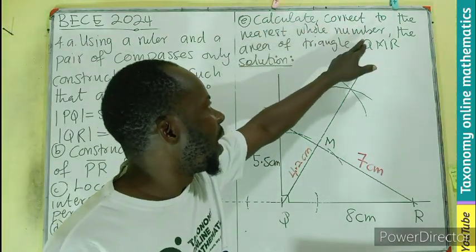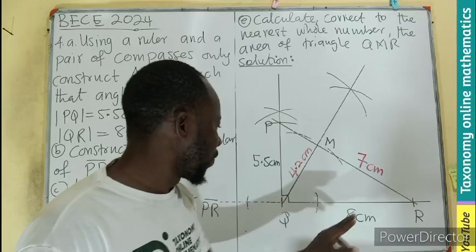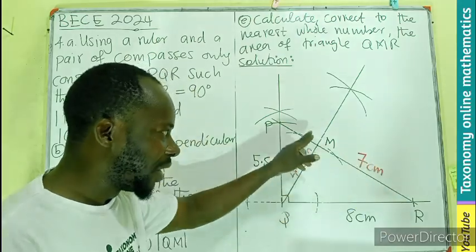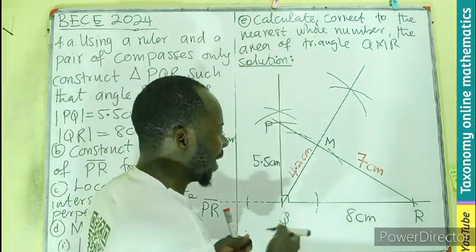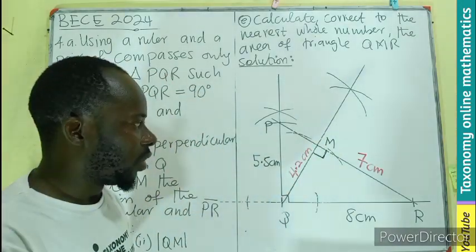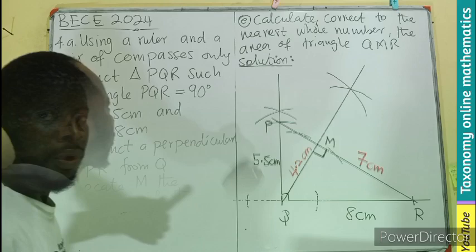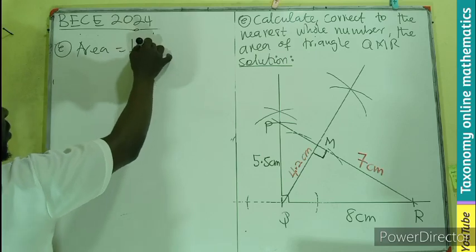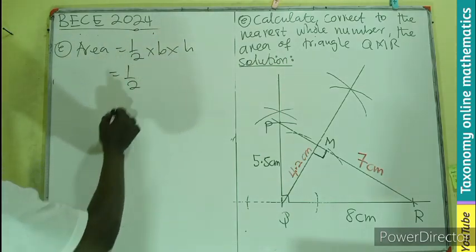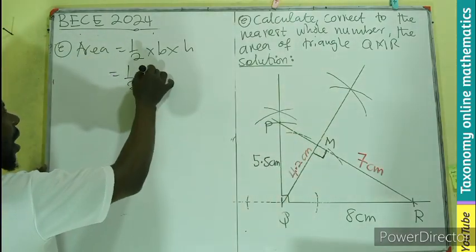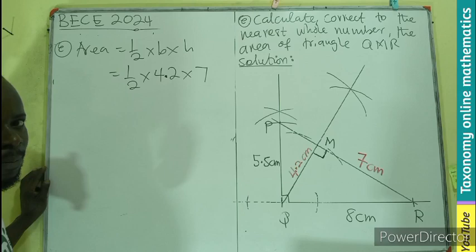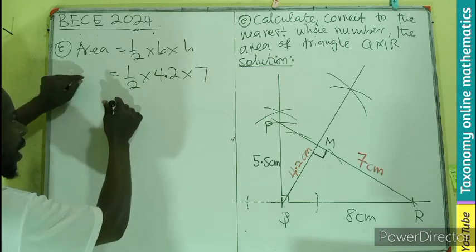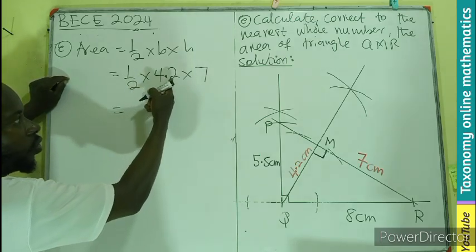The calculation of the area of triangle QMR will be half the base times the height. The base and height are always perpendicular to each other, so the area equals half the base times the height. The base could be MR = 7 and the height QM = 4.2, giving us half of 4.2 times 7, which is 2.1 times 7.